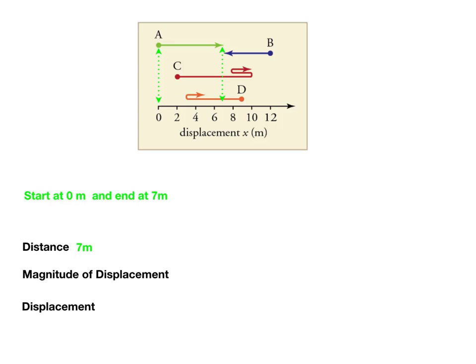When everything is all said and done, it's now 7 meters in the positive direction away from the starting point. So the magnitude of the displacement, which is just the size, is 7, and the total displacement is positive 7 meters.